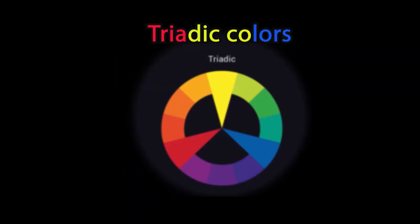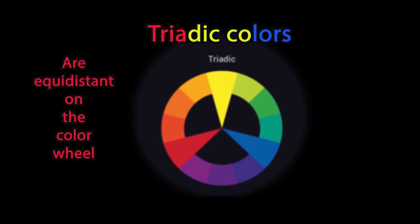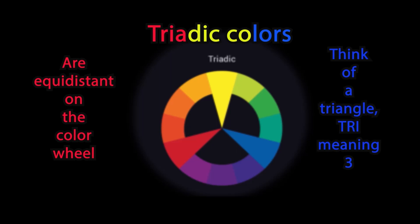Triadic colors. Triadic colors are equidistant on the color wheel. Think of a triangle. Tri meaning three. And its angles would be ideal.